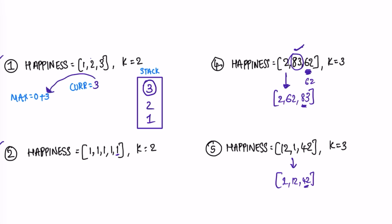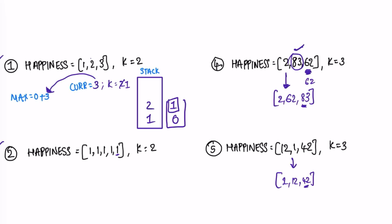I check if current is greater than zero, because we can't decrement below zero. Current is 3, so I add 3 to max, and k goes from 2 to 1. In the next iteration the remaining elements are decremented by one. I pop the next top element; current is 1, which is greater than zero, so I add 1 to max, making max equal to 4, and k becomes zero. As soon as k is zero we finish the iteration and return max.